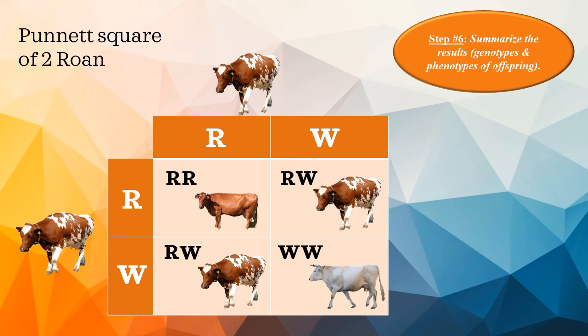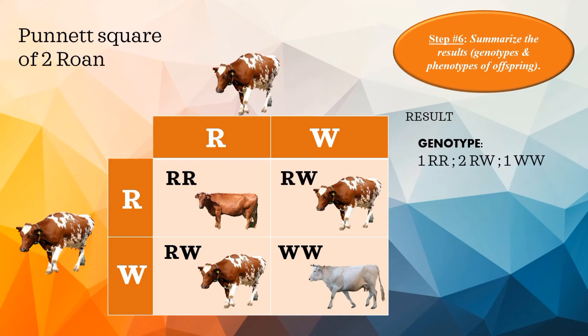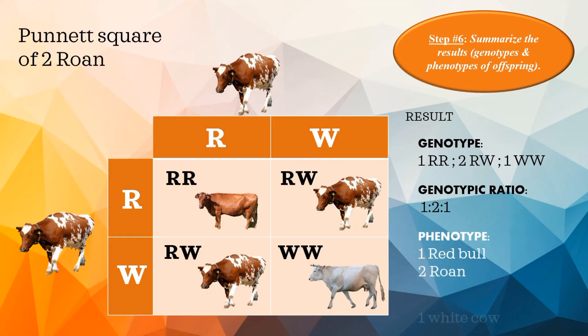Once done, we are going to summarize the result by writing the genotypes and phenotypes of the offspring. For the genotype, we have one homozygous red, two heterozygous rowan, and one homozygous white. The genotypic ratio is 1:2:1. For the phenotype, we have one red bull, two rowan, and one white cow.